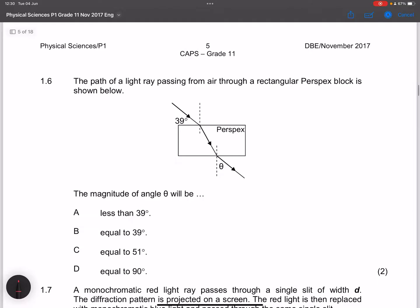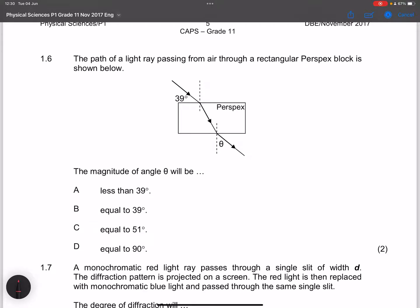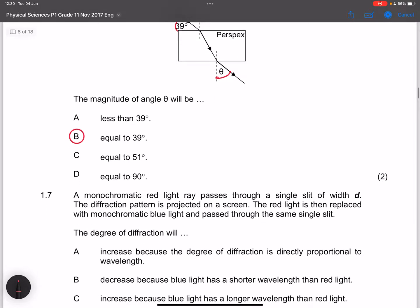The next question, they say the path of a light ray passing from air through a perpendicular perspex block is shown below. They say the magnitude of the angle theta will be. Once again, in this case, this is our incident angle. In this particular case, we know that we've got perspex. So the angle theta should actually be equal to 39 degrees. So it should also be equal to 39 degrees.